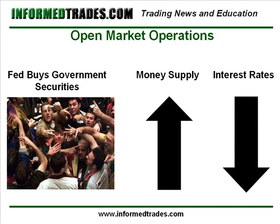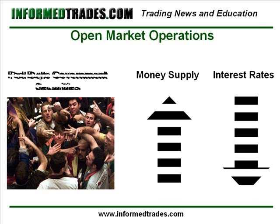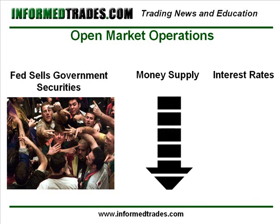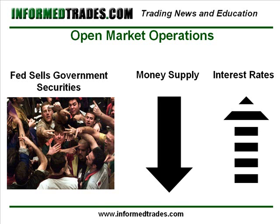Conversely, when the Fed wishes to increase interest rates, they will instruct the open market committee to sell government securities, thereby taking the money they earn on the proceeds of those sales out of circulation and reducing the money supply. When supply is taken away, everything else remaining constant, price, or in this case interest rates, will rise.